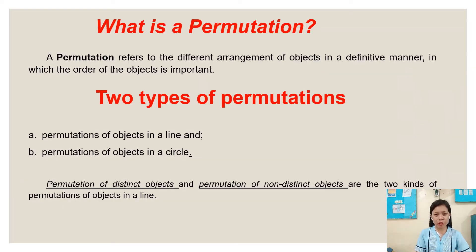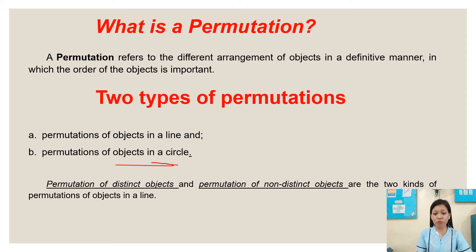So what is permutation? A permutation refers to the different arrangement of objects in a definitive manner in which the order of the objects is important. There are two types of permutations: a permutation of objects in a line and a permutation of objects in a circle. Permutation of distinct objects and permutation of non-distinct objects are the two kinds of permutations of objects in a line.